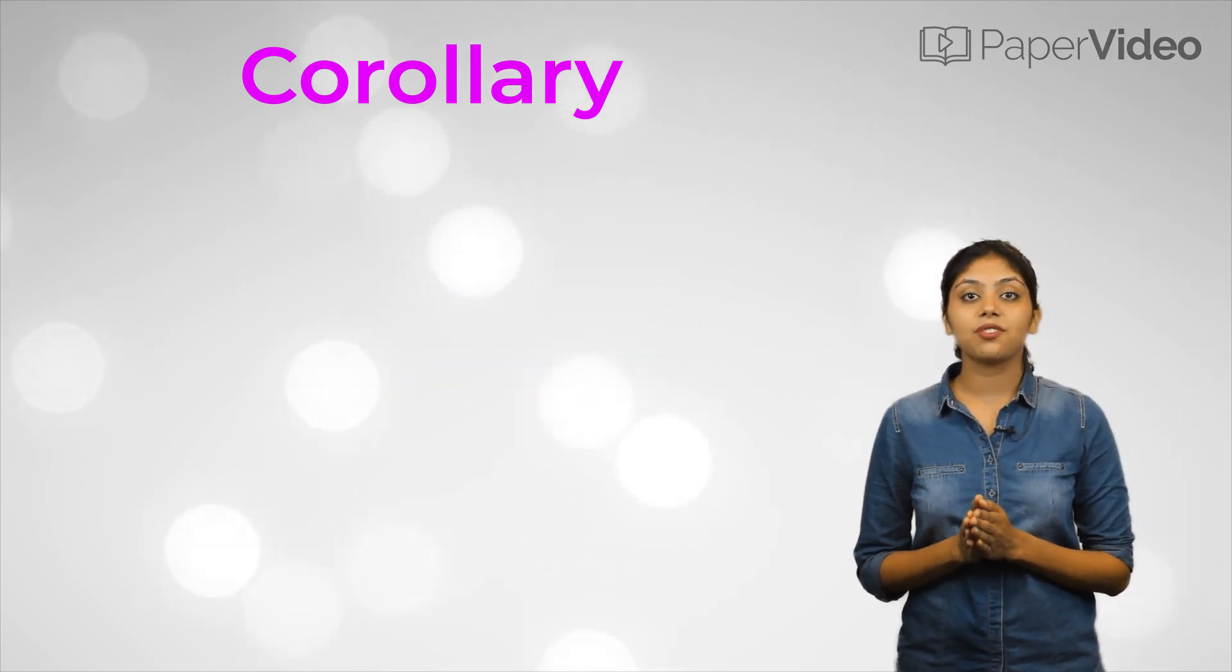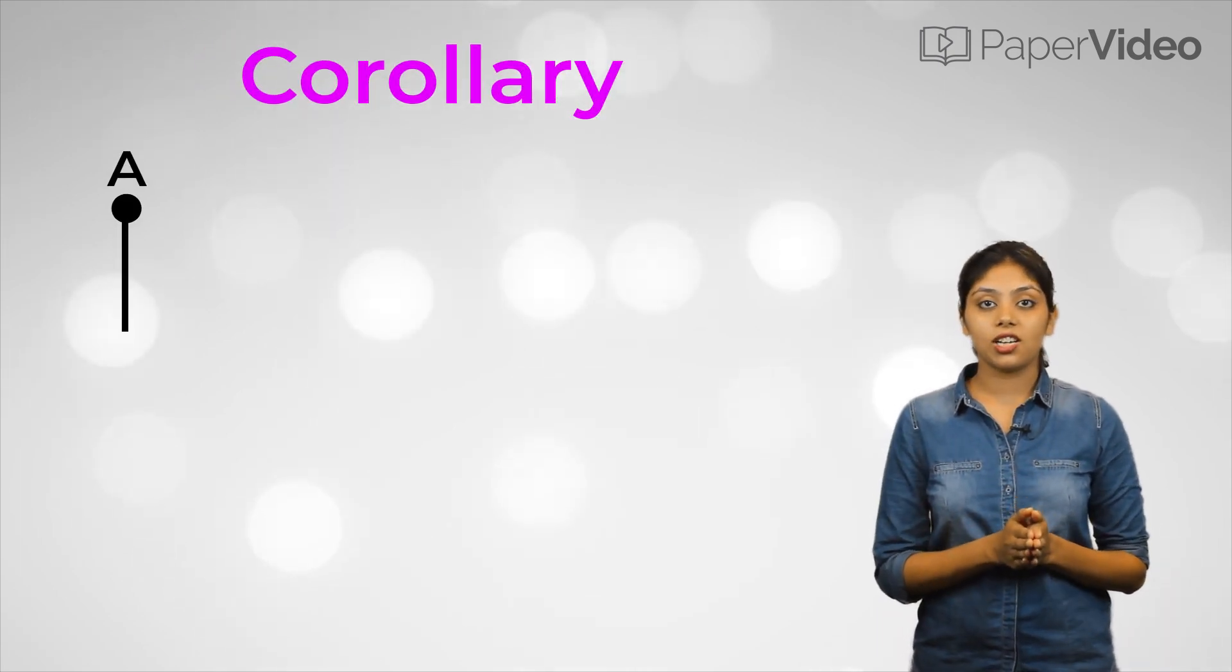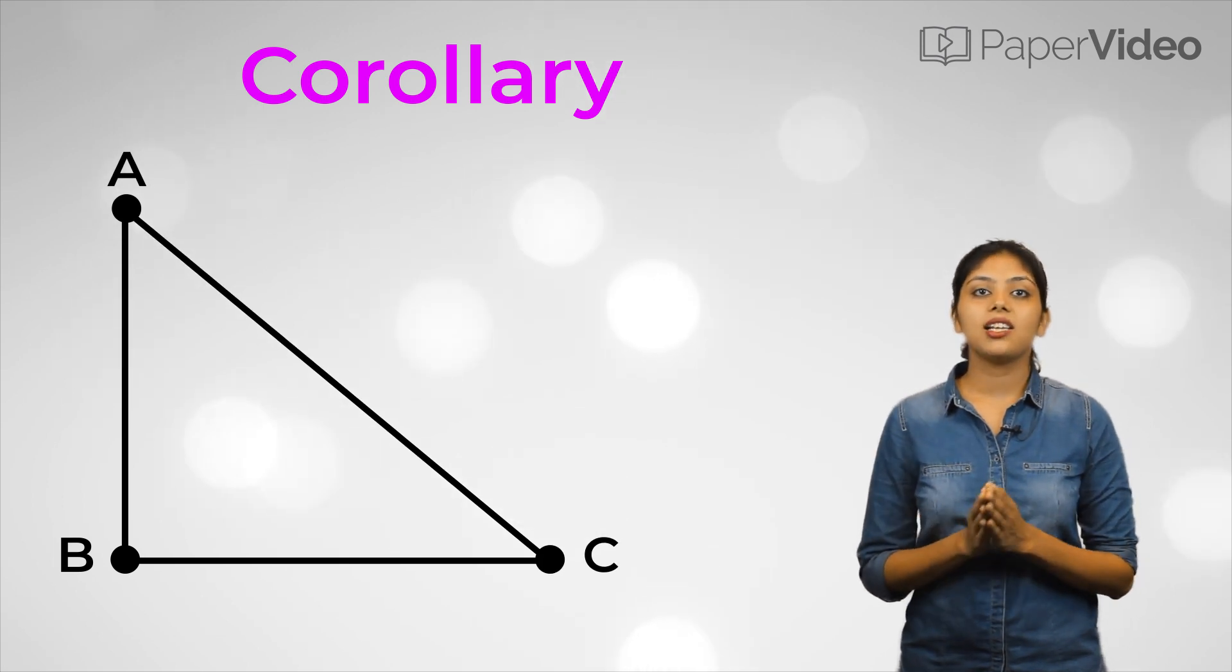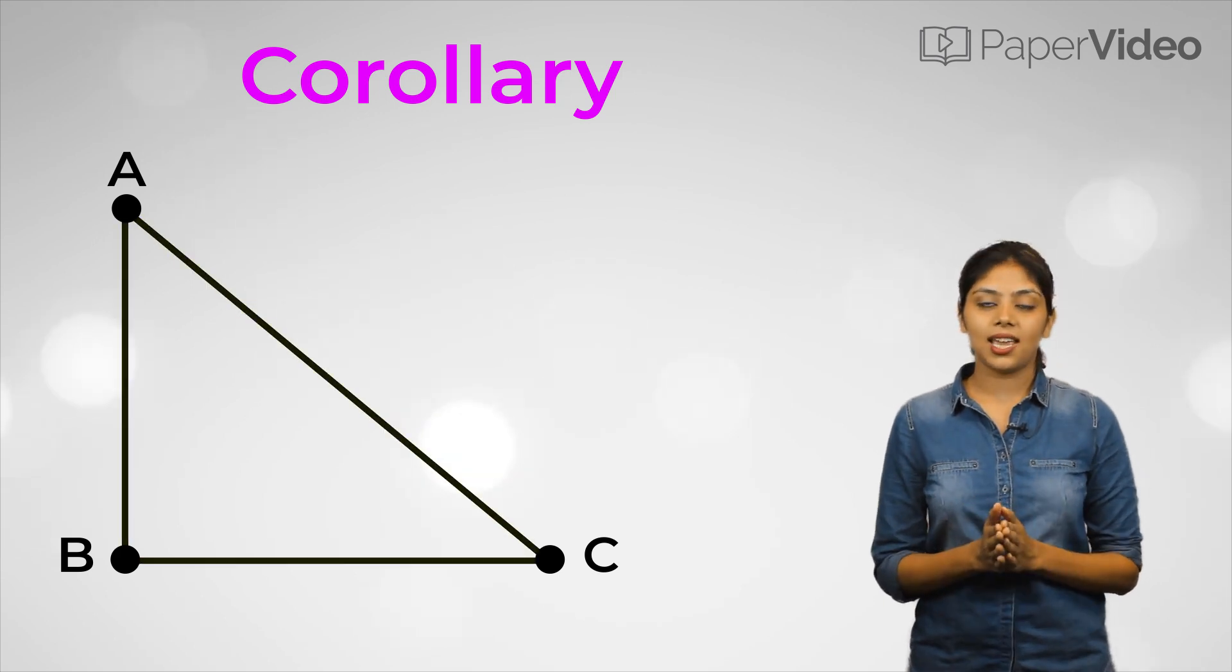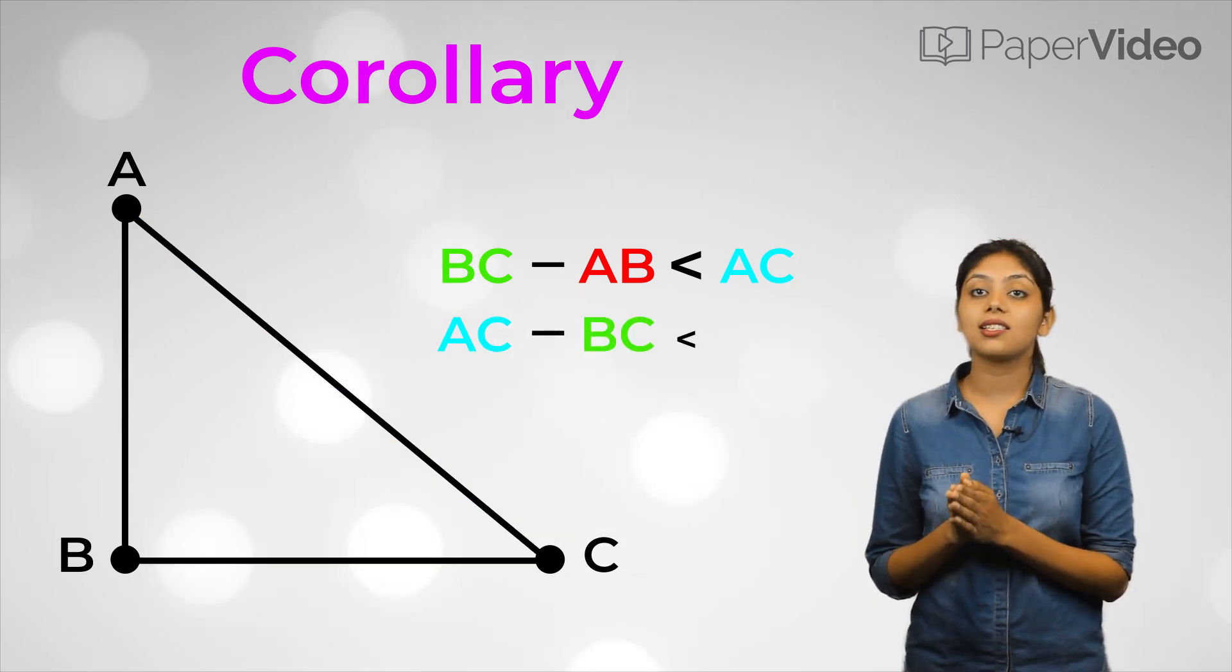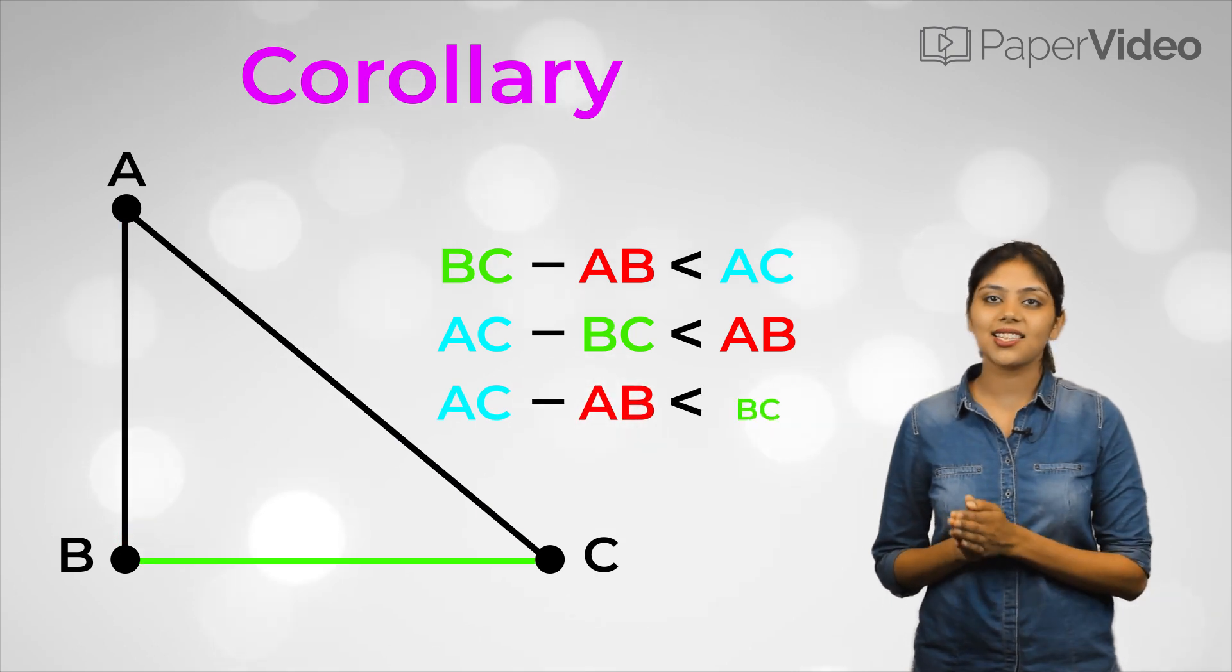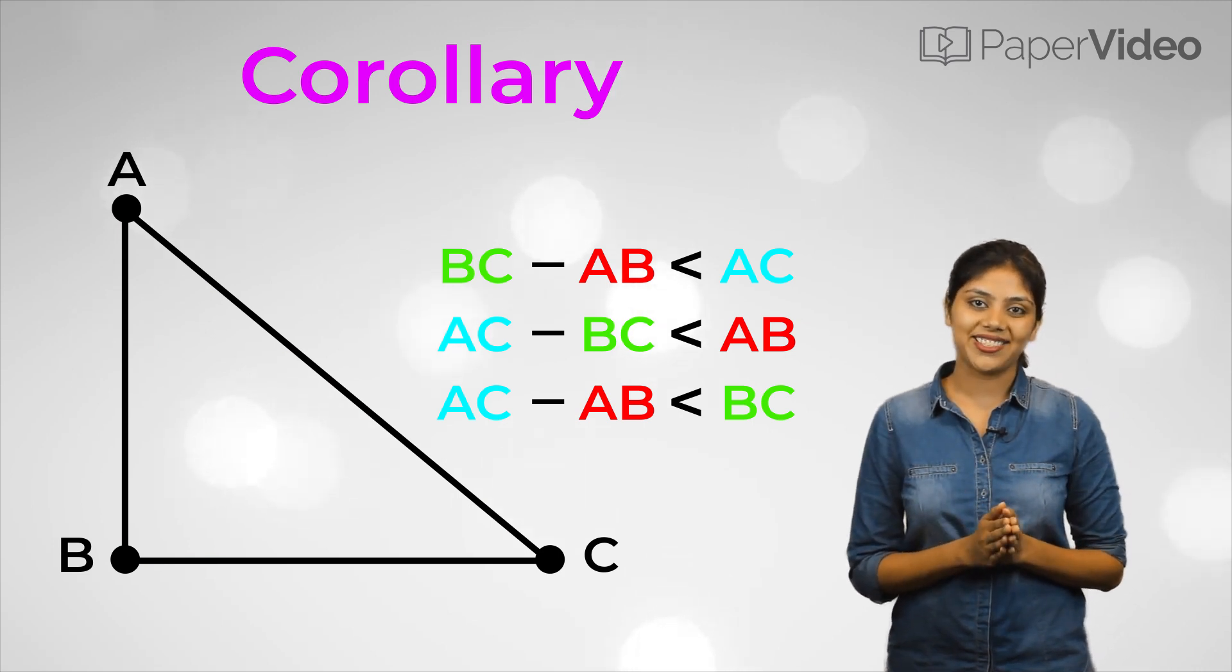This theorem leads us further to another important corollary. According to the corollary, the difference between the length of any two sides of a triangle is always less than the third side. This means that in triangle ABC, BC minus AB is less than AC, AC minus BC is less than AB, and AC minus AB is less than BC. This corollary also holds true for all types of triangles.